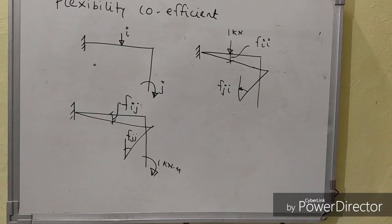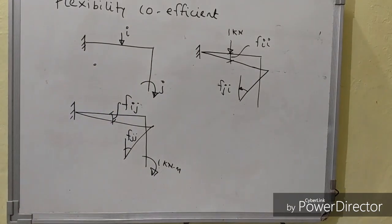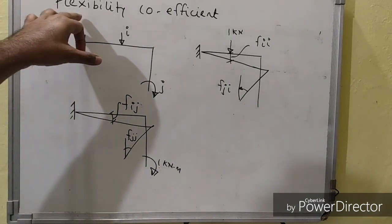In this video I will explain flexibility coefficients. Flexibility coefficients are extensively used in the force method. If you want to analyze indeterminate structures — whether continuous beams or rigid jointed frames — we are required to find the flexibility coefficients when analyzing the structure by the force method. Flexibility means the displacement caused due to unit load. It will be a deflection or a rotation, and these are caused due to unit load or unit moment.